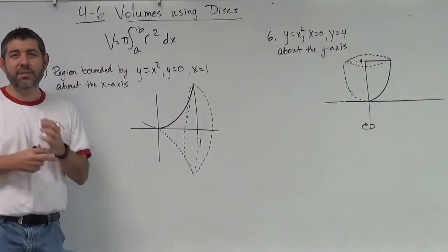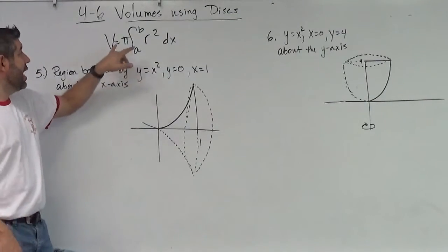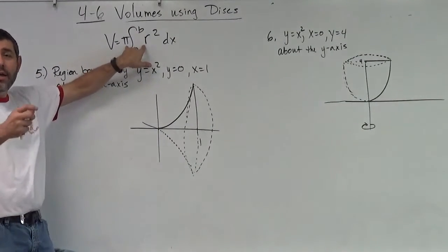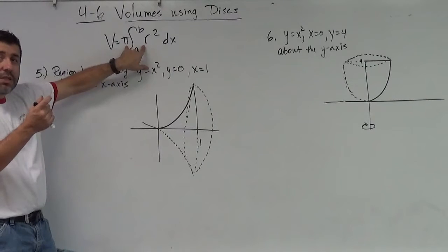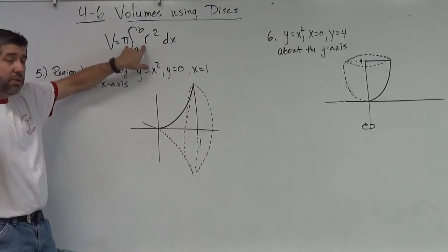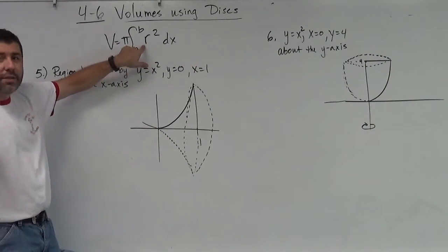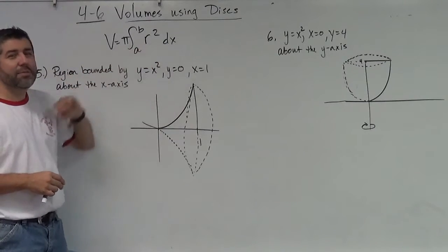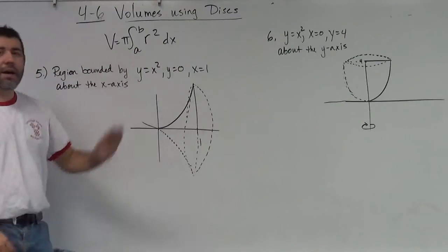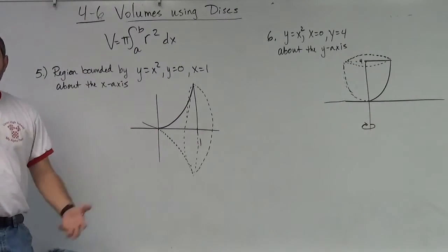So it's the same idea as the known cross sections, because I have the area of my cross section, which in this case are discs, which are cylinders, times dx, which is the width, and we're going to have our formula for the volume.